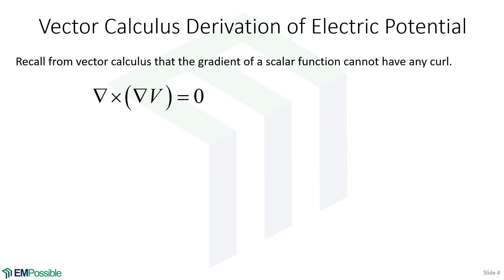Remember in vector calculus, we had this general identity: the gradient of any scalar function cannot have curl. We looked at an Escher drawing of an always-increasing staircase to illustrate this. So any scalar function has to obey that identity.